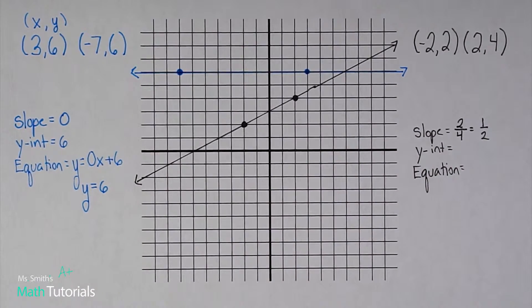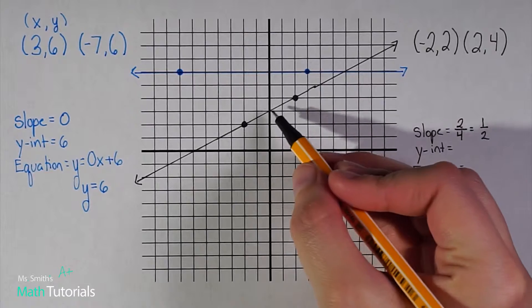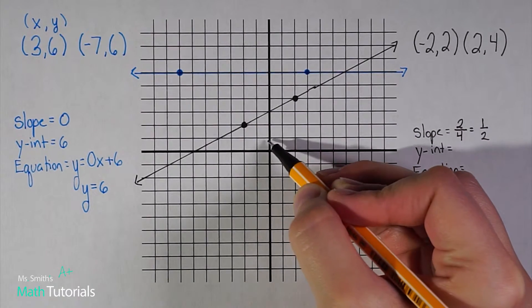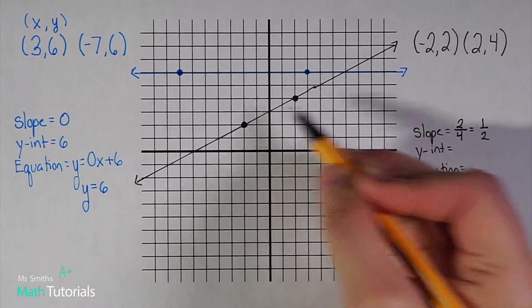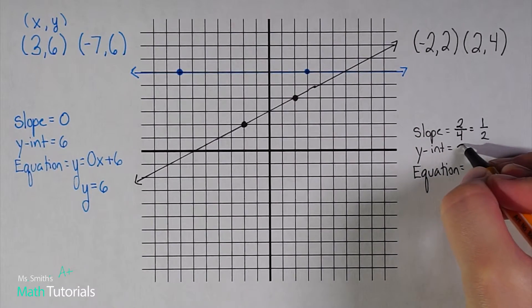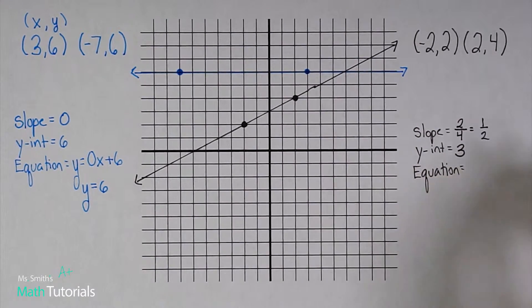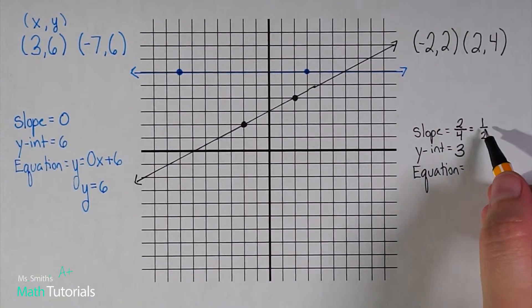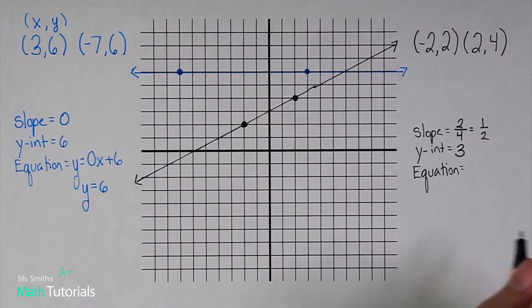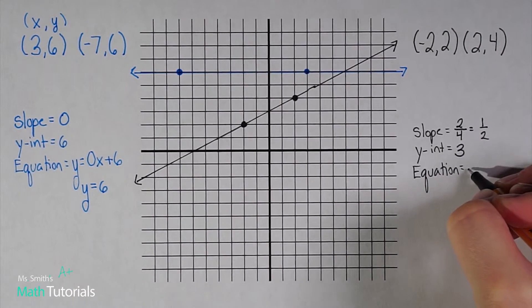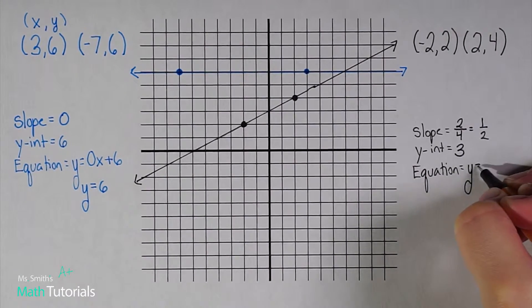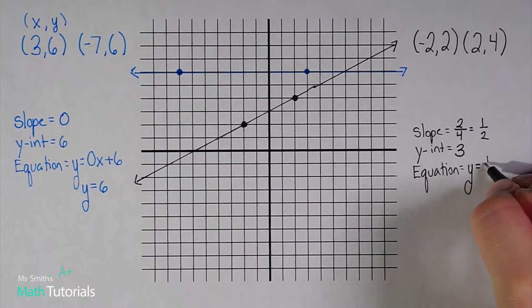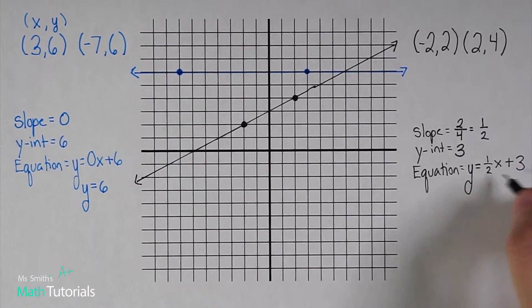I can tell my y-intercept pretty easily. It falls very clearly at the one, two, three mark. So my y-intercept is right at three. Now that I know my slope and my y-intercept, it'll be really easy to write an equation: y equals m slope one half x plus three. There's my equation.